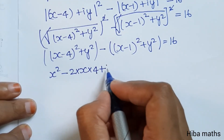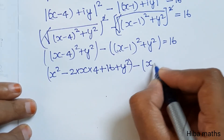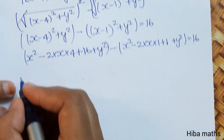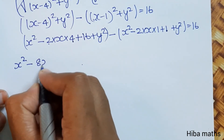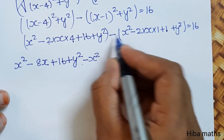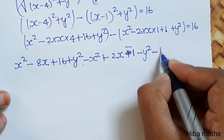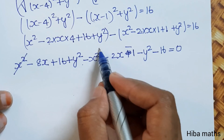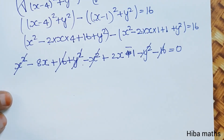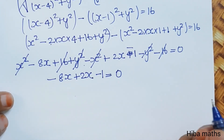Expanding using (a - b)² = a² - 2ab + b²: (x² - 8x + 16 + y²) - (x² - 2x + 1 + y²) = 16. The x² terms cancel, y² terms cancel, and 16 - 16 from constants: the remaining terms give -8x + 2x - 1 = 0.